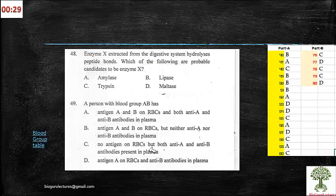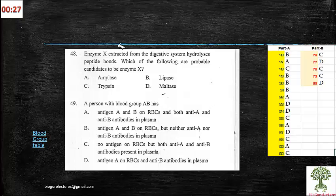Next slide, 48th one. Enzyme X extracted from the digestive system hydrolyzes peptide bonds. Remember, peptide is a part of protein. Which of the following are probable candidates to be enzyme X? As it is proteinaceous in nature, you can always expect the protein component. Amylase is a carbohydrate and lipase breaks down fats, and maltase again carbohydrates. So finally we got trypsin. So here's the answer for us.